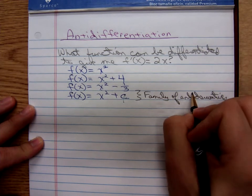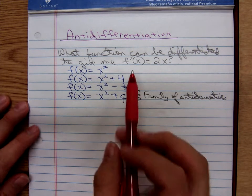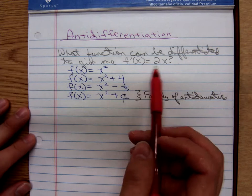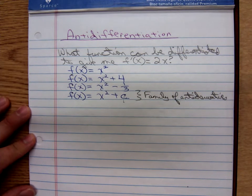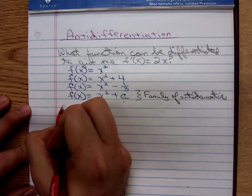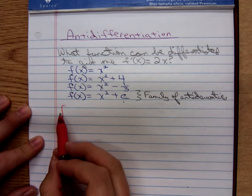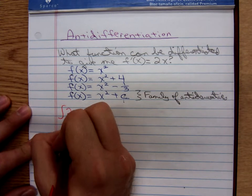We're going to introduce some notation now. Rather than writing out what function can be differentiated to give me f'(x) = 2x, I could denote that. This little squiggly symbol I'm writing is called an integral symbol. Put the function, the derivative there that I'm looking at, 2x.